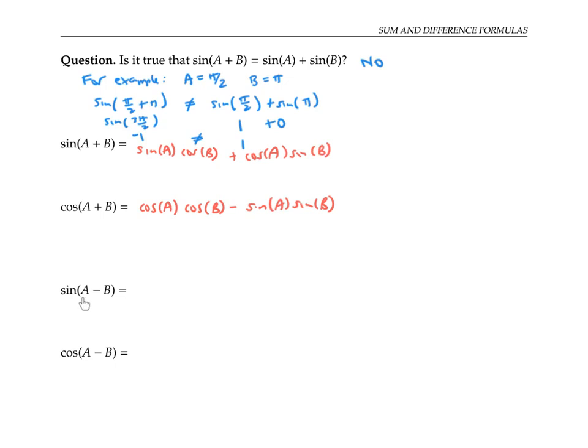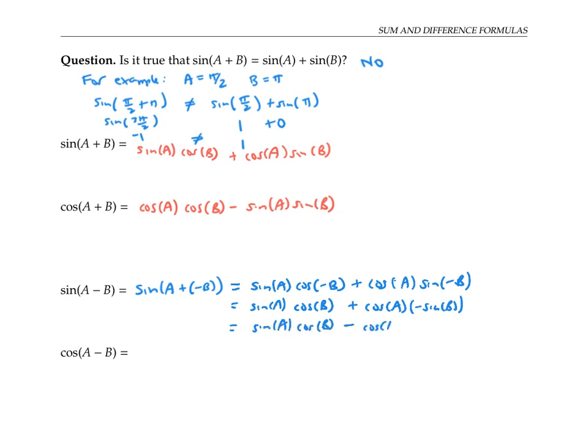Once you do, it's easy to figure out the sine and cosine of a difference of two angles. One way to do this is to think of sine of A minus B as sine of A plus negative B, and then use the angle sum formula. So this works out to sine A cosine of negative B plus cosine A sine of negative B. And now, if I use the fact that cosine is even, I know that cosine of negative B is cosine of B. And since sine is odd, sine of negative B is negative sine of B.